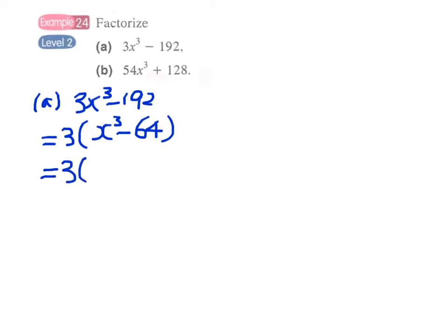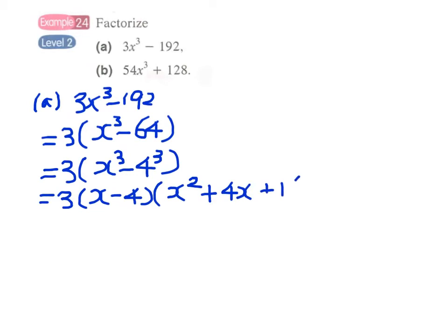Therefore, we have the cube of x minus the cube of 4. We have 3 times (x - 4) times (x² + 4x + the square of 4, which is 16). And similarly for part b.